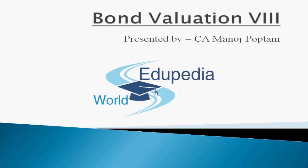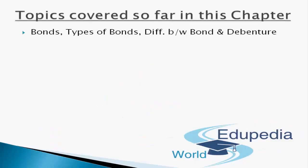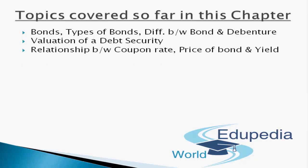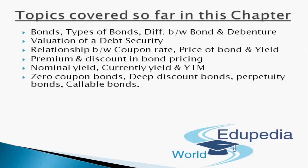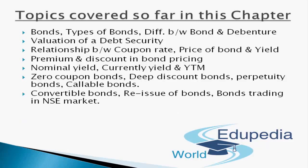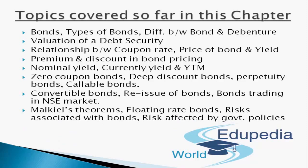Currently we are going through the topics of bond valuation. By now we have completed: bonds, types of bonds, difference between a bond and a debenture, valuation of a debt security, relationship between coupon rate, price of the bond and yield, premium and discount in bond pricing, nominal yield, current yield, yield to maturity, zero coupon bonds, deep discount bonds, perpetuity bonds, callable bonds, convertible bonds, reissue of bonds, bonds trading in the national stock exchange, Malkiel's theorem, floating rate bonds, and risks associated with bonds.